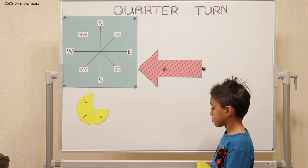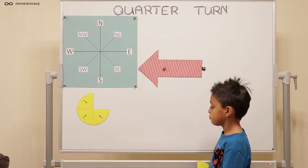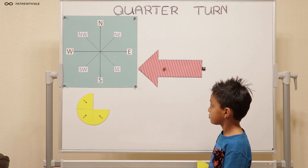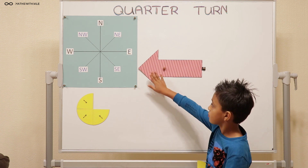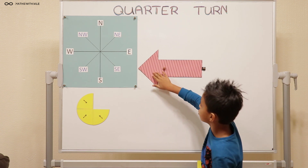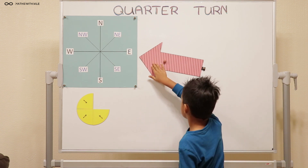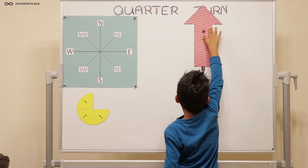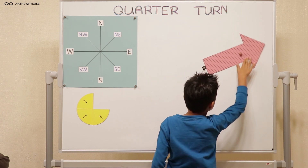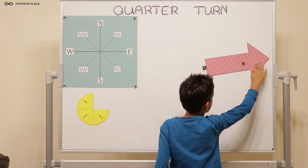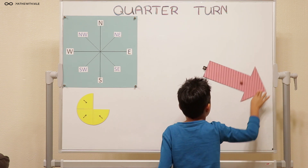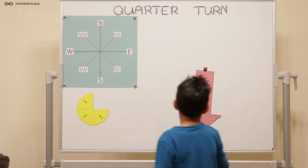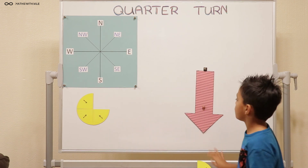What about, can you turn it three quarters turn clockwise? Three quarters turn clockwise. One quarter, two quarter, three quarter. And it is pointing to south.